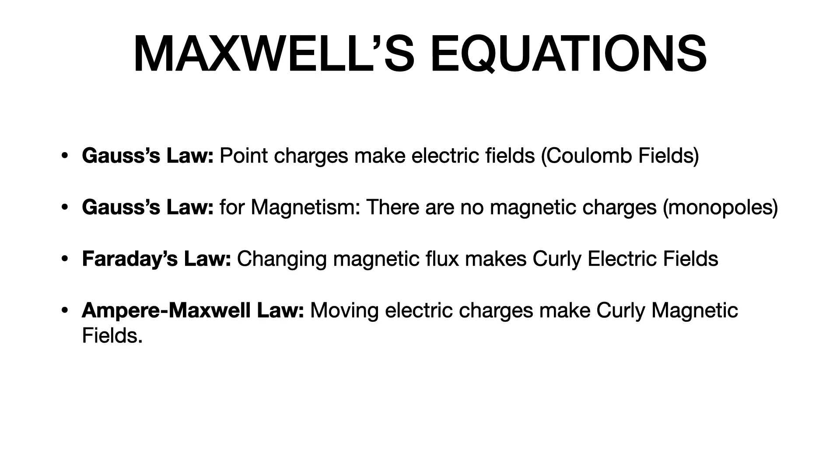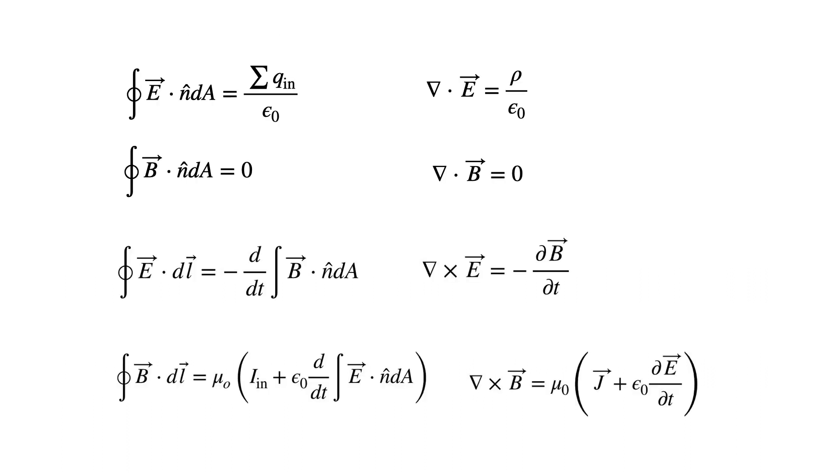Faraday's law says that changing magnetic flux makes curly electric fields. We've done that one. And then we have this last one, the Ampere-Maxwell law. It says that moving electric charges make curly magnetic fields or changing electric fields make curly magnetic fields.